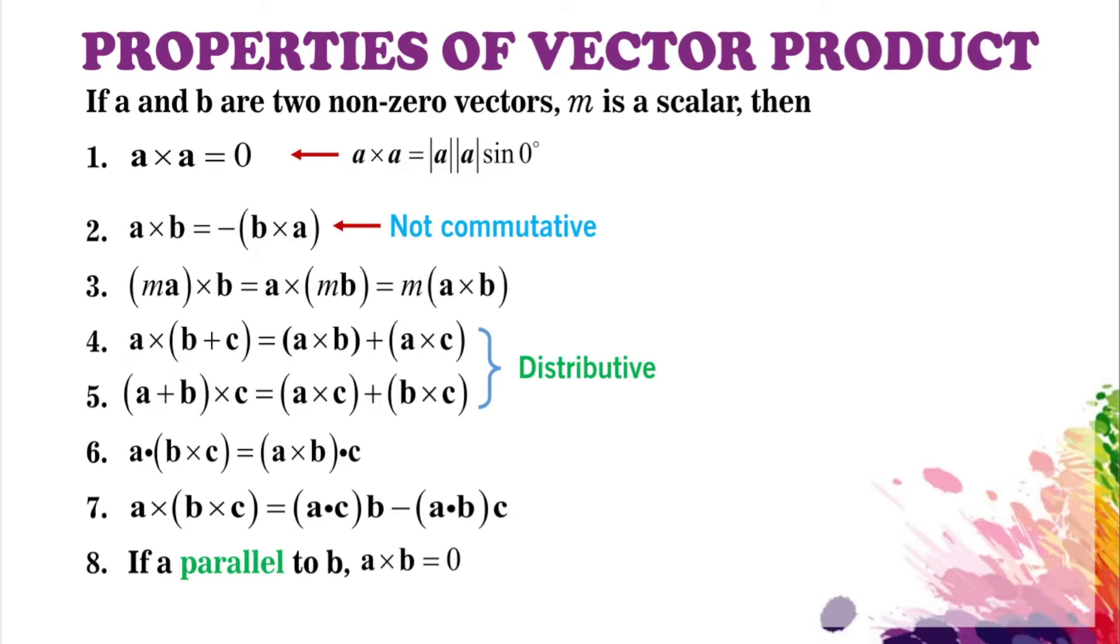If A and B are two non-zero vectors and M is a scalar, then A cross A by vector product definition is magnitude A times magnitude A times sine 0. We know that sine 0 equals 0, so the whole thing will equal zero vector, or 0i plus 0j plus 0k.